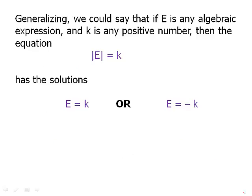Generalizing: if e is any algebraic expression and k is any positive number, then the equation |e| = k has the solutions e = k or e = -k. Note that this notation using e for an expression is just shorthand used here — not a general notation you'll see elsewhere. The idea is that we can put any expression inside the absolute value, and whatever value that absolute value equals, the expression itself equals the positive or negative of that value.